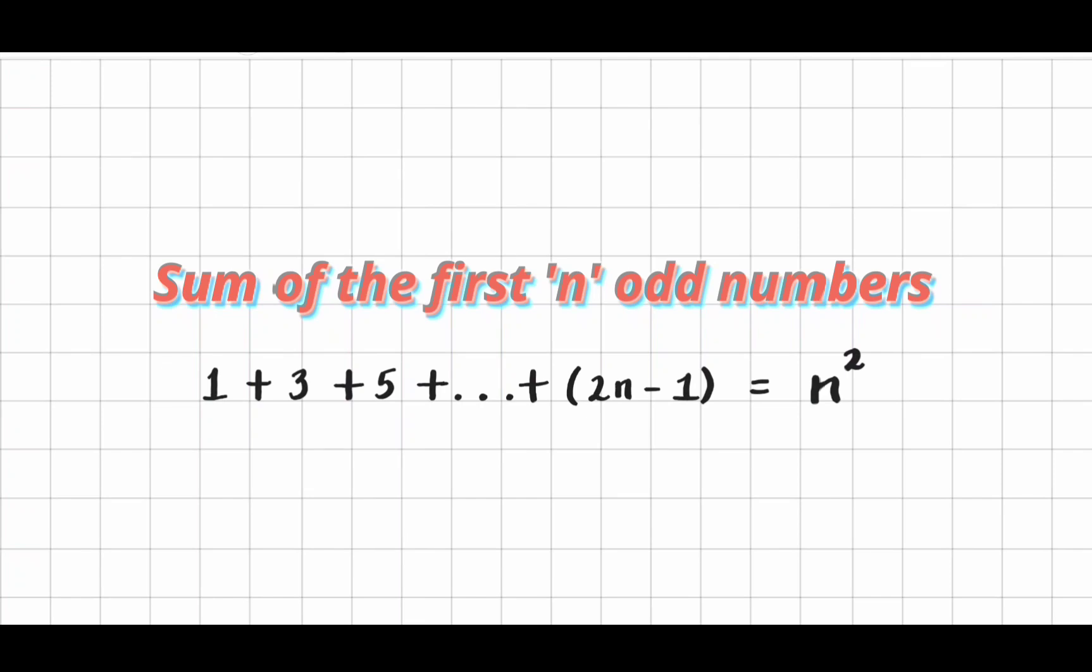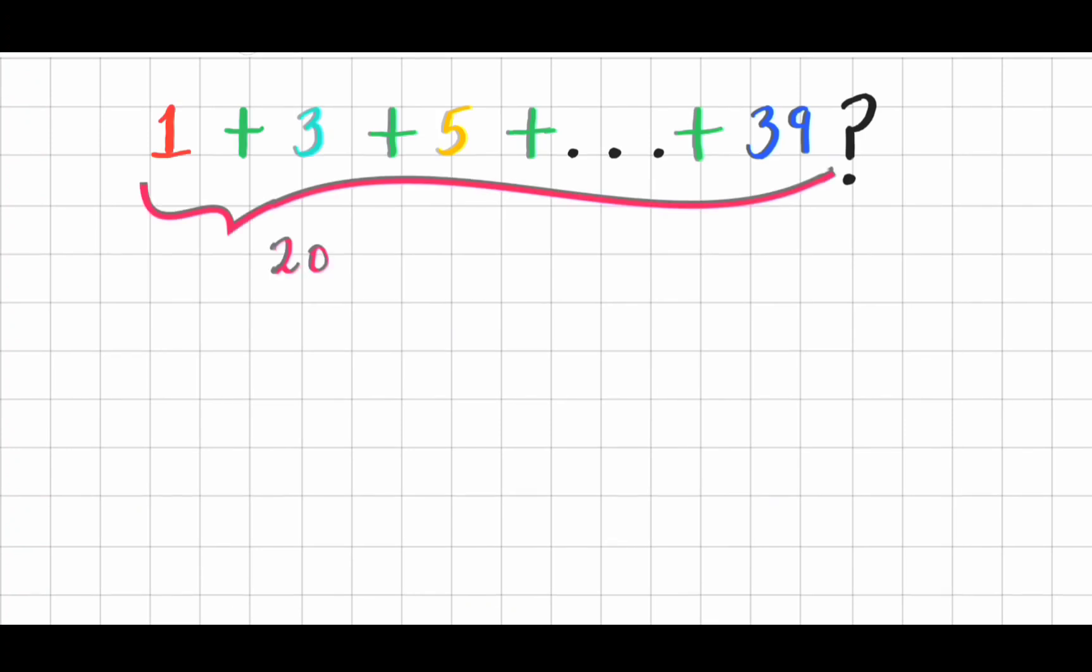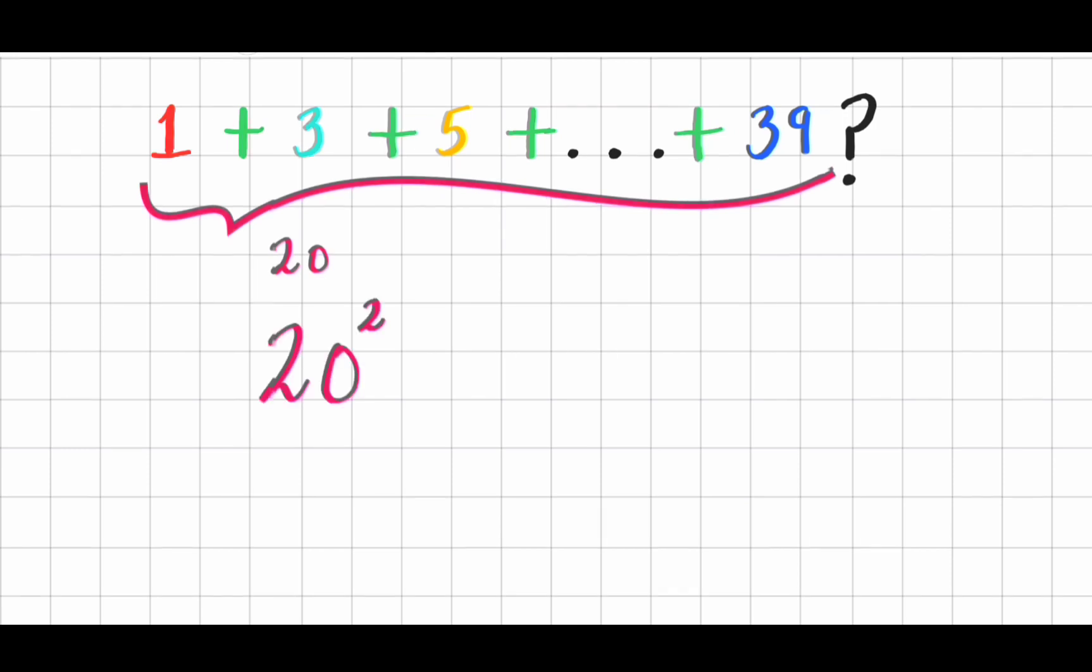So the bottom line is, the sum of the n positive odd numbers is equal to n square. Now let's use this to find the sum of the odd numbers between 0 and 40. There are 20 odd numbers between 0 and 40. So the sum must be 20 square or 20 times 20, which equals 400.